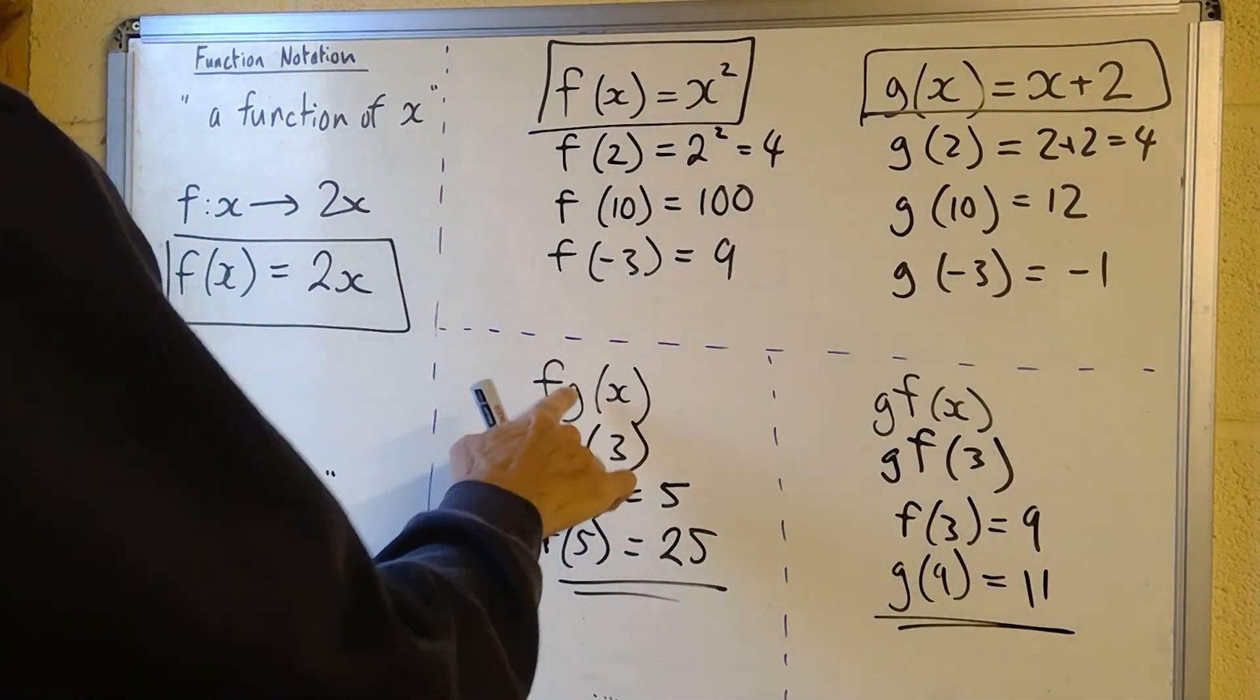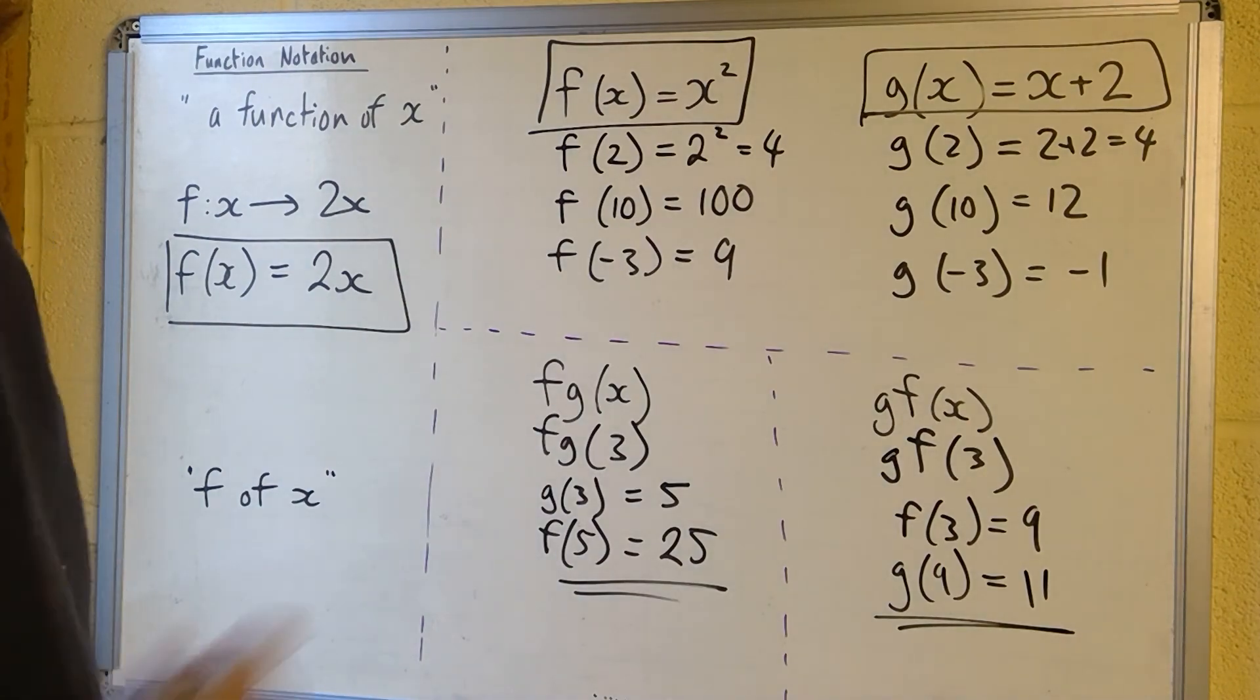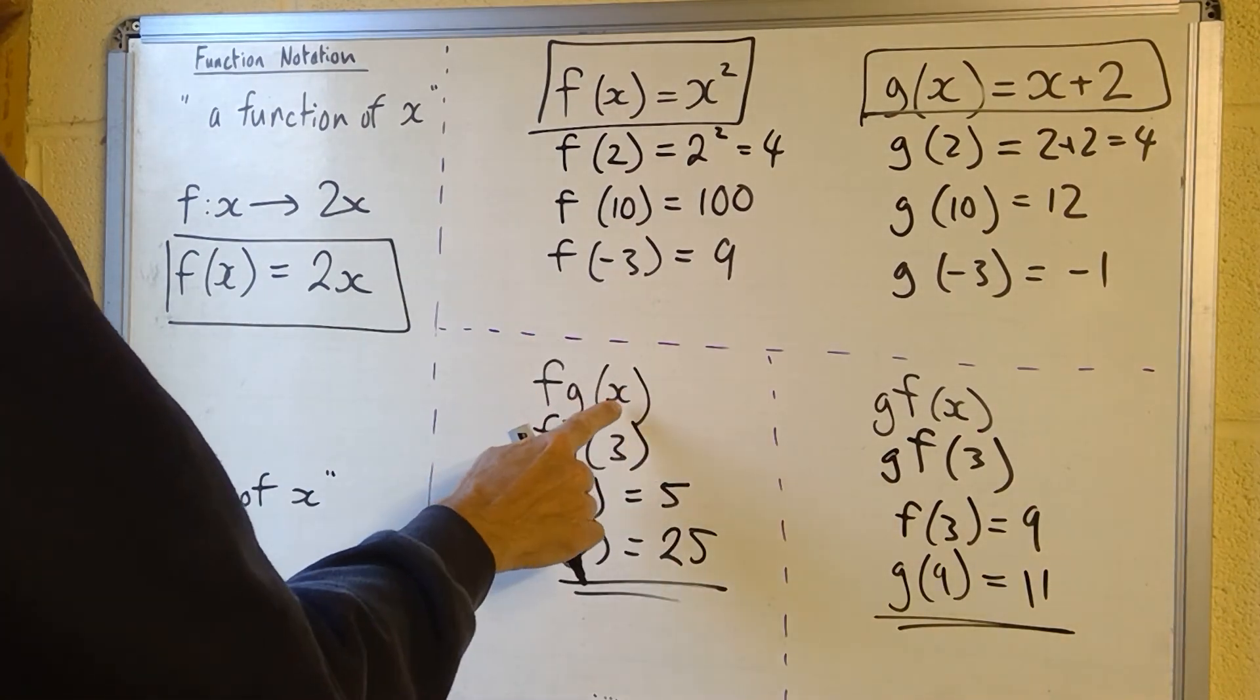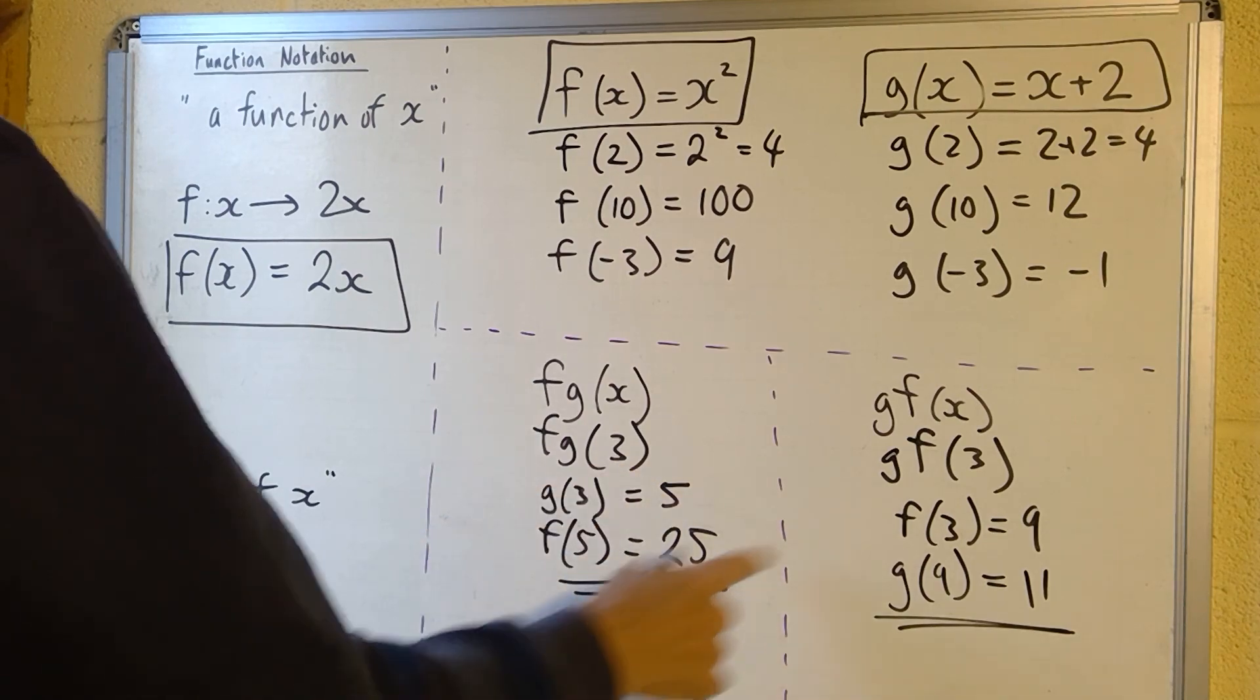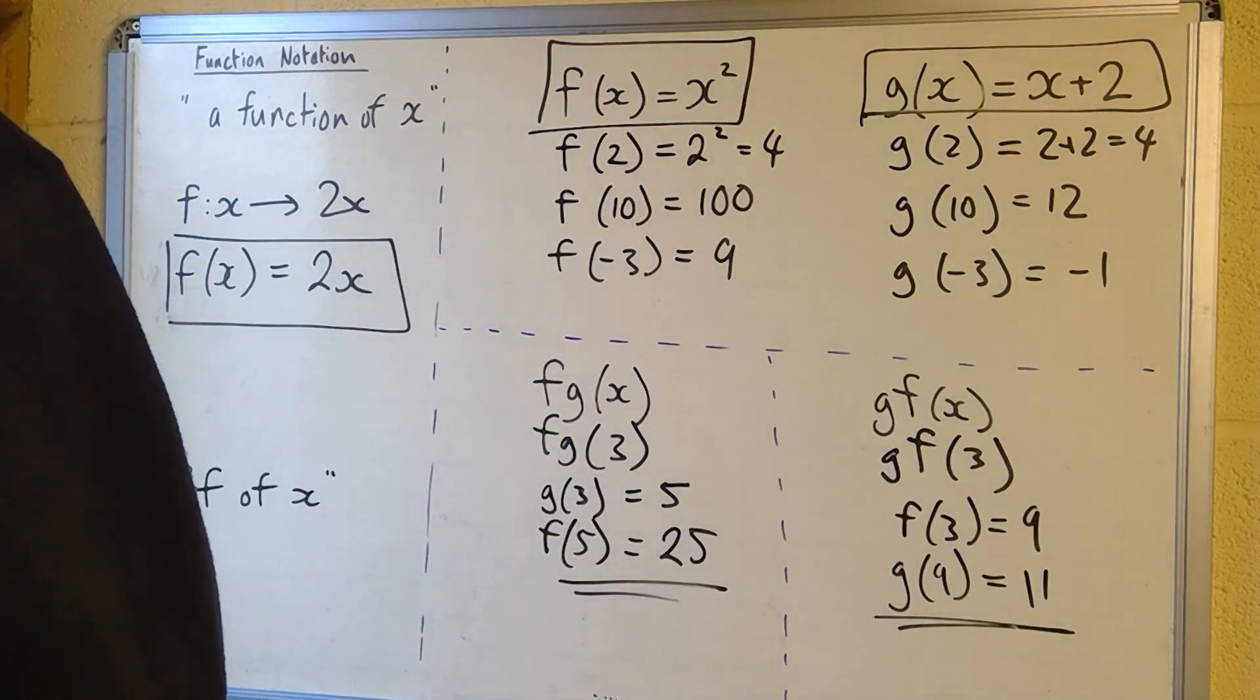And so this is just basically repeating what we've done, f of g of x. You can have as many of these as you want. One important point to point out here before we finish is that f of g of 3 was 25, g of f of 3 was 11, so the order is important.